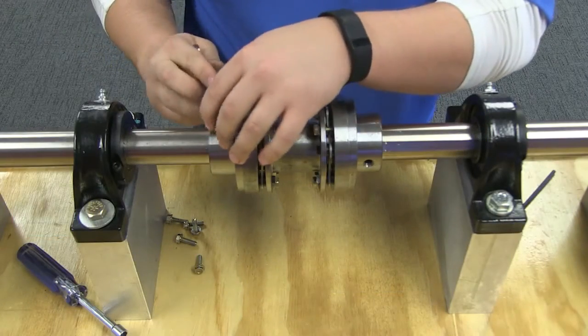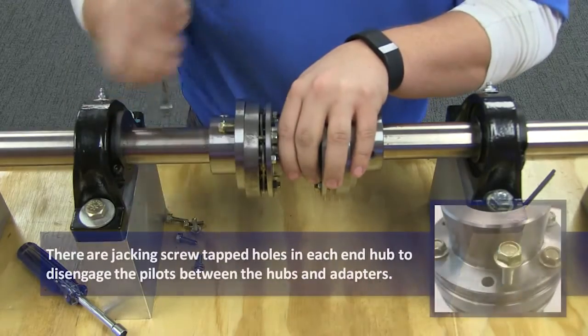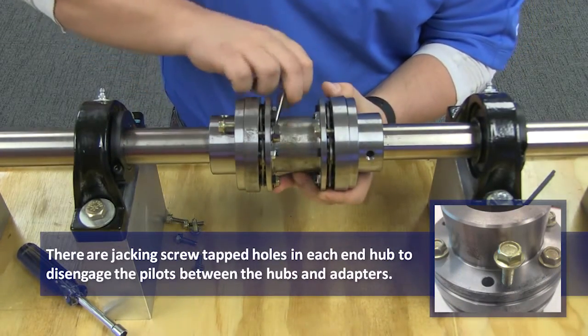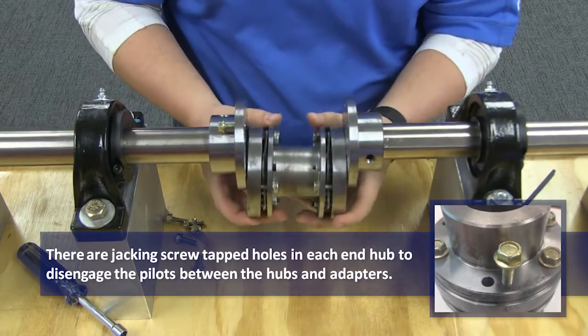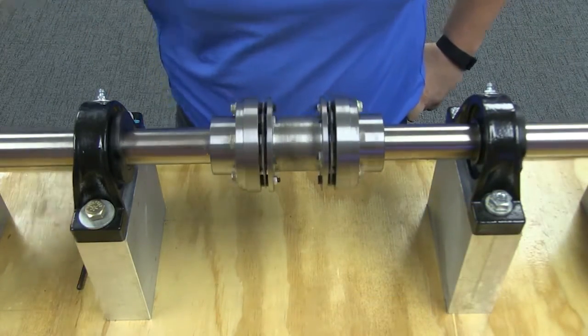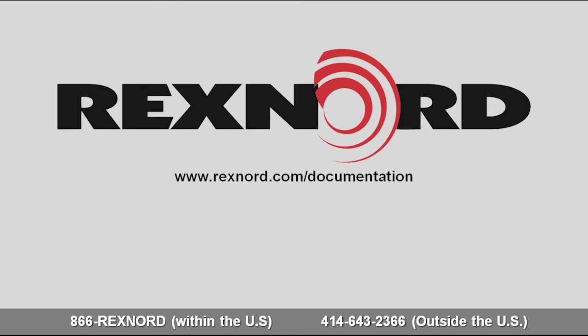Like most Rexnord couplings, the Thomas disc coupling can be replaced in place. To replace the wearing disc packs of the coupling, simply remove the center subassembly by removing all cap screws from the hubs and compressing the center member subassembly. When replacing the center subassembly, you can either replace the disc packs or the entire subassembly. For more information or documentation on Rexnord products, please visit Rexnord.com.